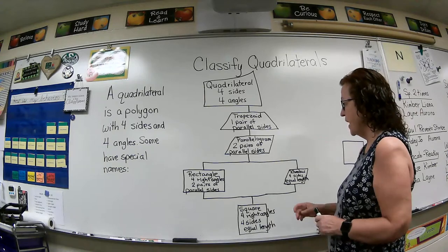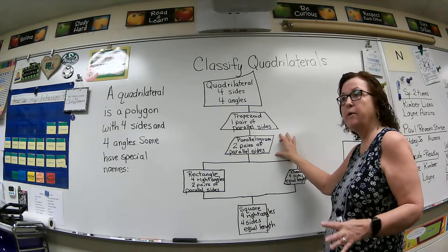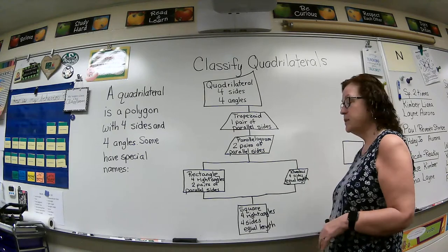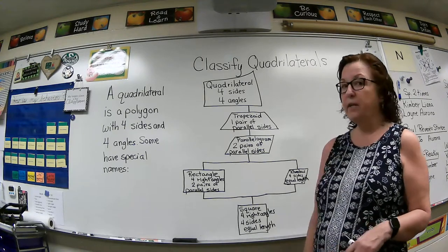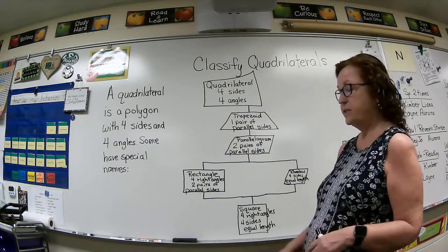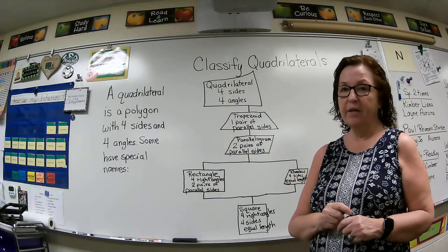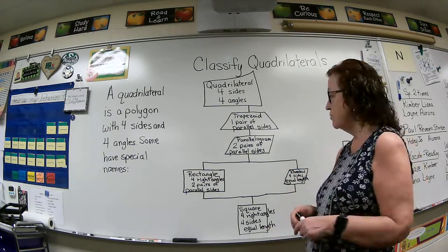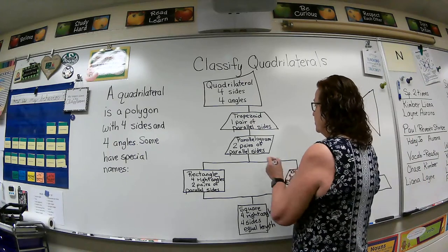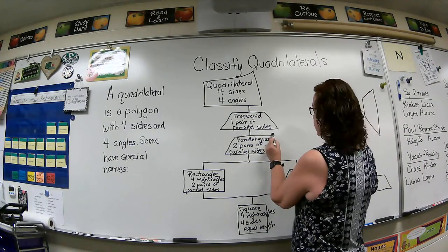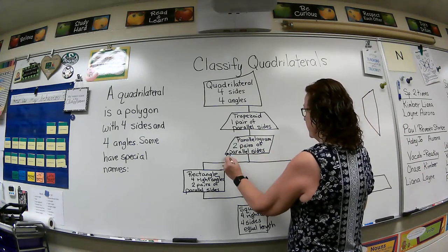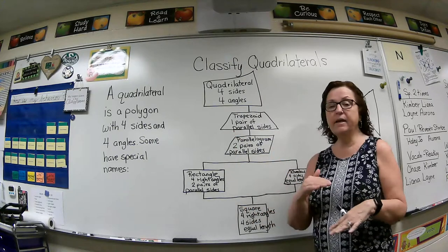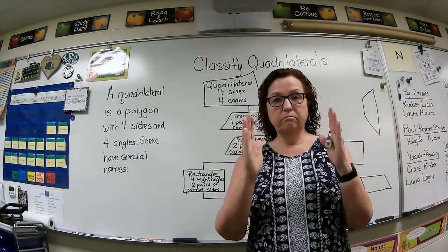Coming down off of that, we have what's called a parallelogram — with the word parallel in it. It has two pairs of parallel sides, as well as four sides and four angles. Opposite sides are parallel.